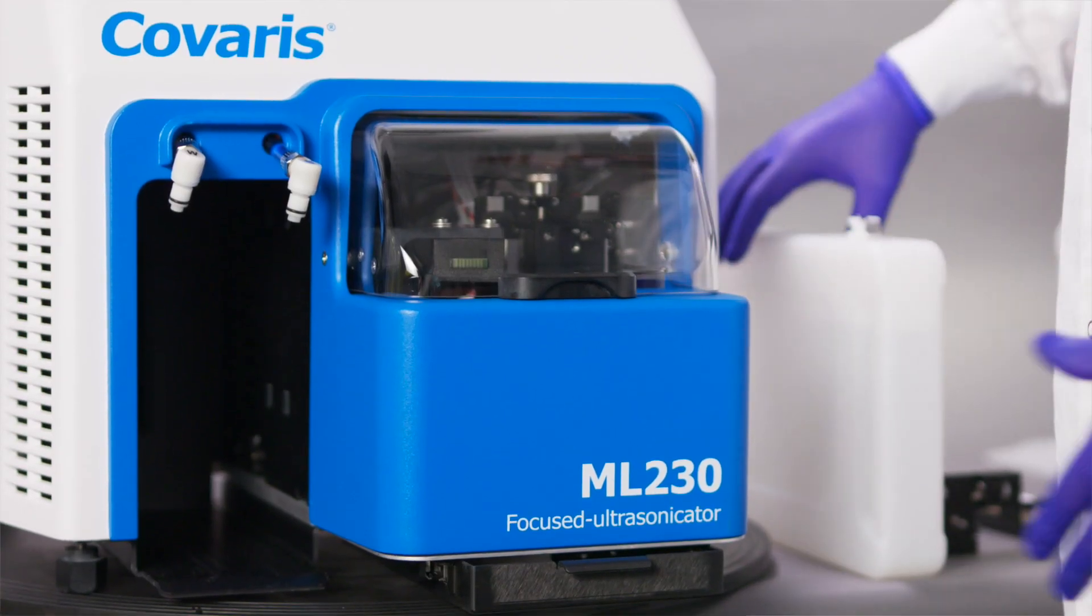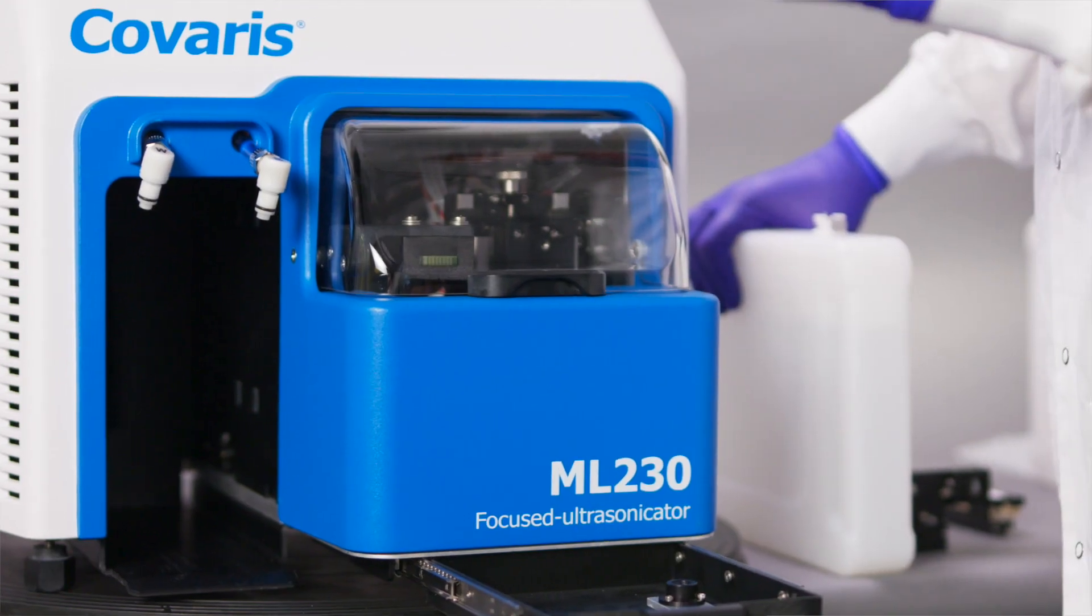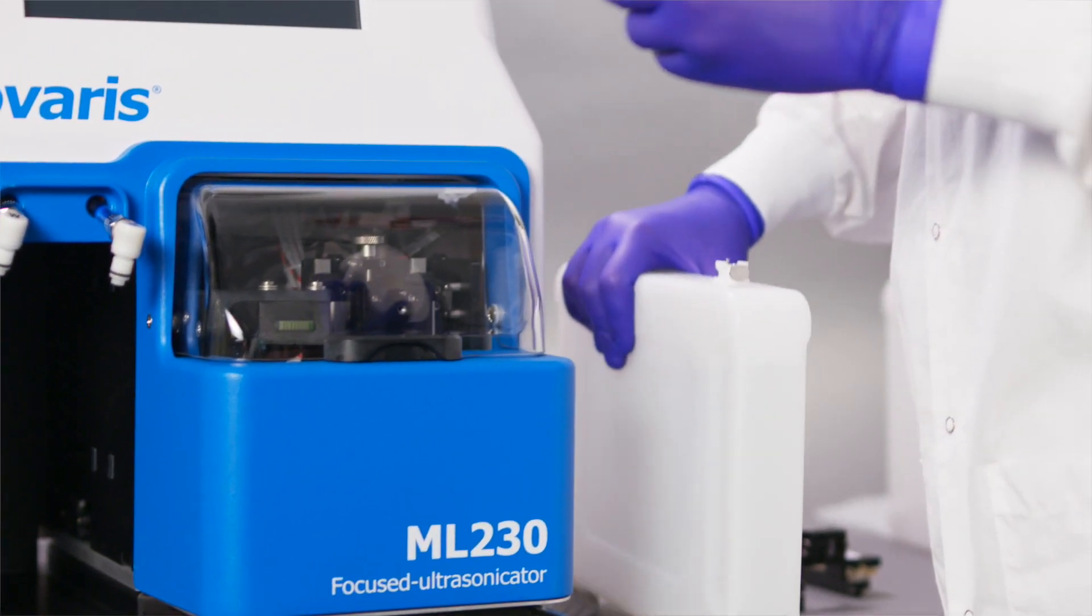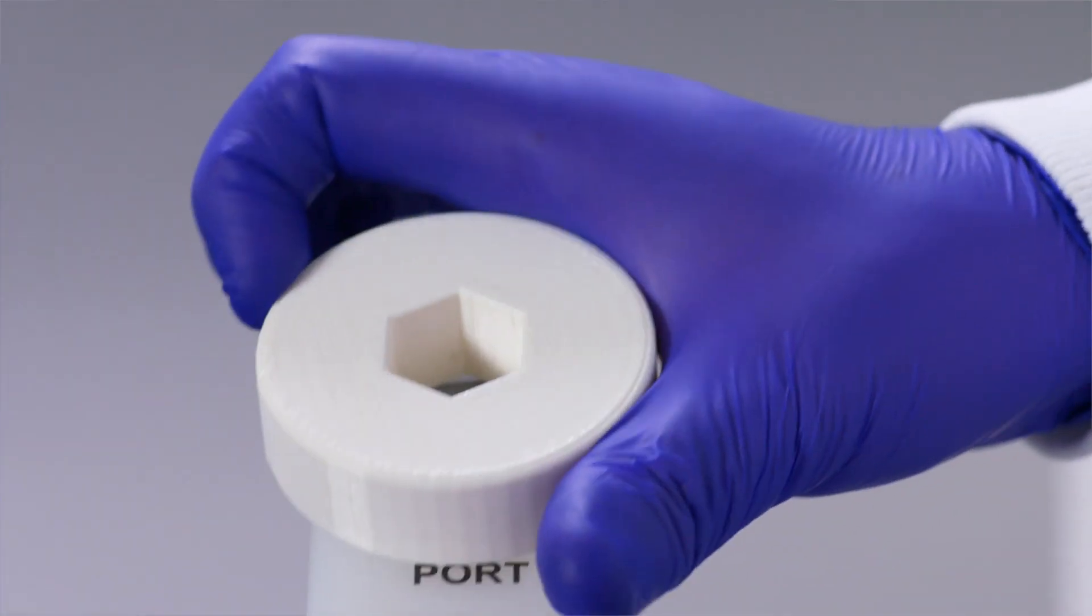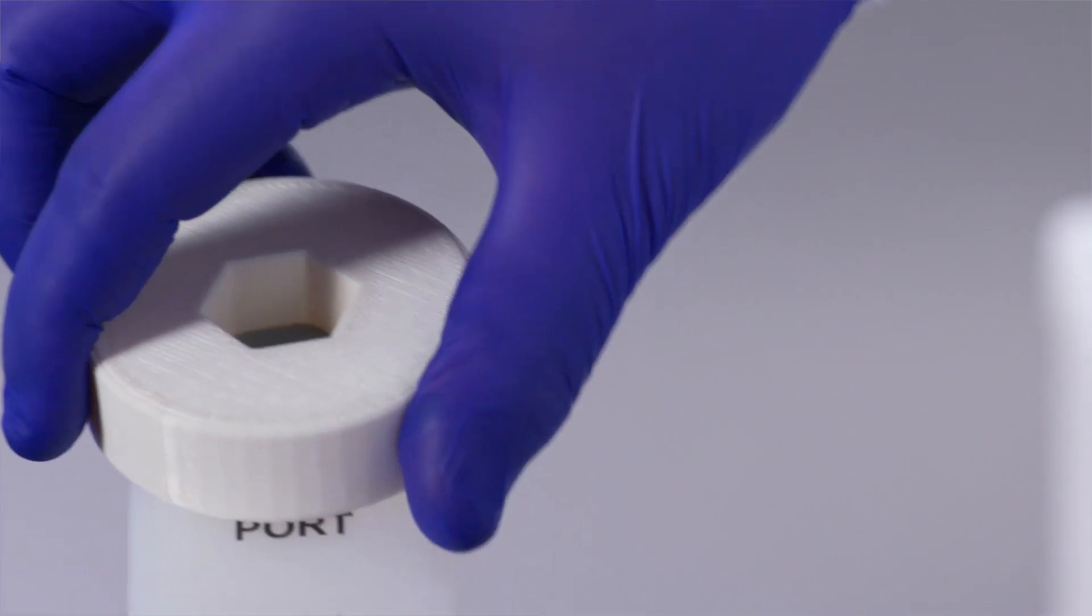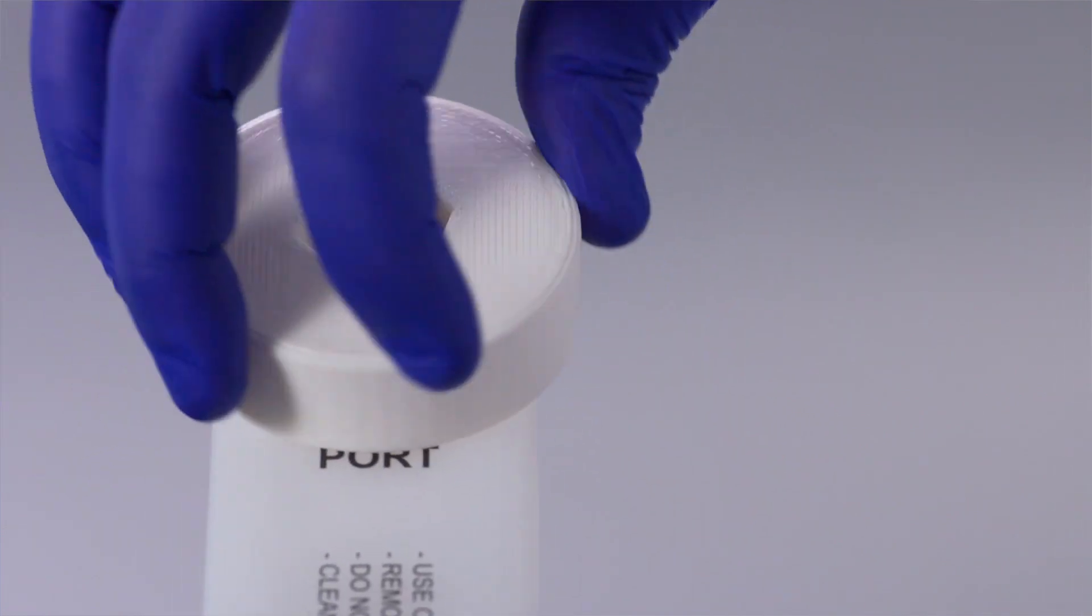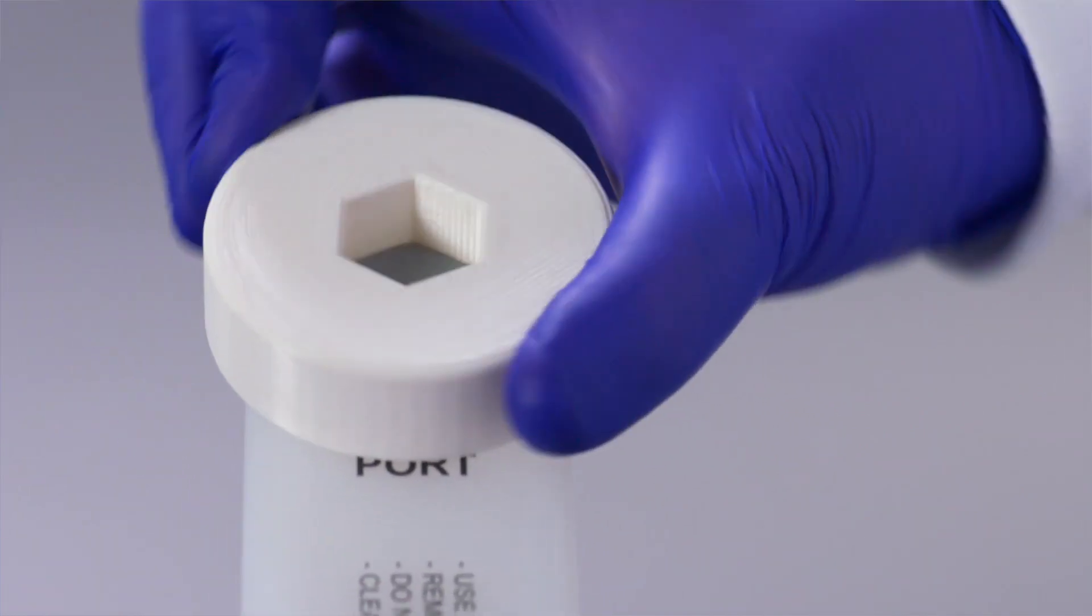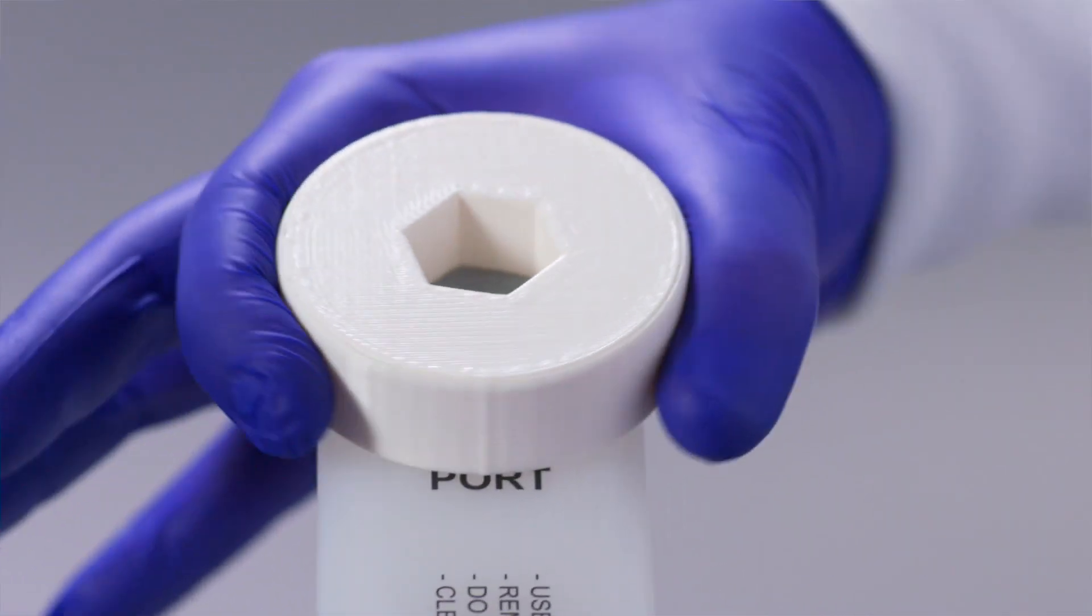Locate the two plastic bottles and the bottle cap tool in the accessory drawer. Remove the vented cap on the supply bottle using the cap wrench and fill the bottle with AFA-grade water. Replace the cap using the cap wrench. Do not over-tighten the cap. The caps for waste and supply are not interchangeable.